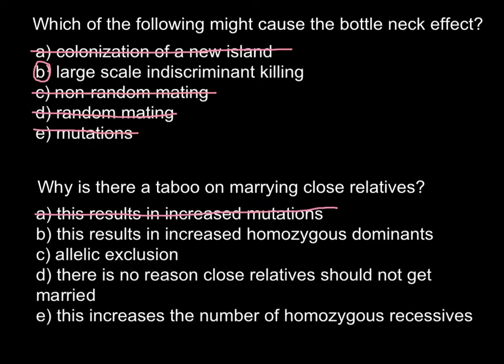We cross out answer A. Answer B says this results in increased homozygous dominance. This is true — the level of homozygosity increases with each round of inbreeding. However, homozygous dominance doesn't cause genetic diseases in the progeny, so this cannot be the reason for the taboo. This answer is only partially correct, so we cross it out. Answer C is allelic exclusion, which means that when we have two alleles for the same gene, only one allele is expressed and protein is made, while the other is excluded and silenced. We cross out this answer as well.